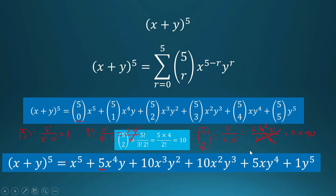So five taken two is equal to ten. We can produce these coefficients using the combination formula. Without the combination formula, we need the Pascal triangle to write out the expansion of a binomial raised to an exponent — but with the combination formula, we can produce the expansion directly using n taken r.